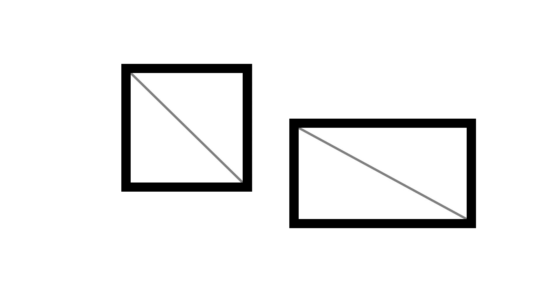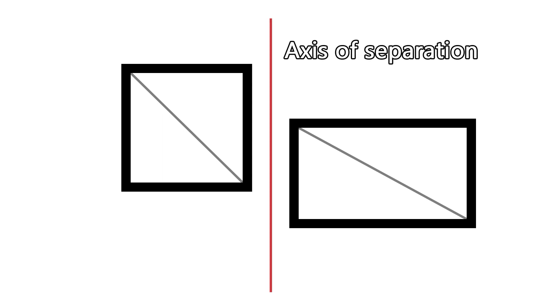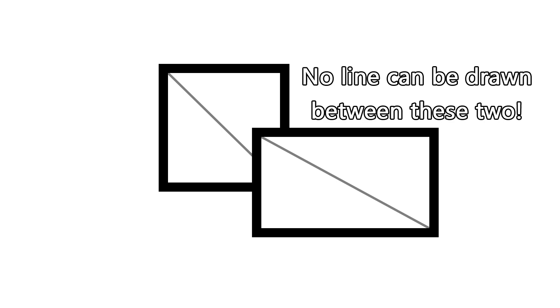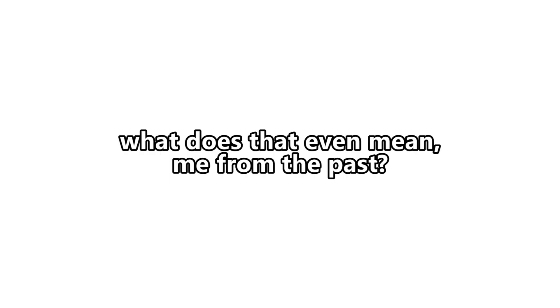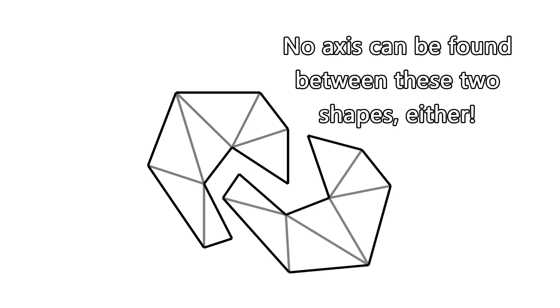If you have two shapes — let's say these two rectangles — and if you are able to find a line that you can draw between them, then that is one axis of separation and you know that these two shapes are not intersecting. This is a fairly solid generic test you can use for a bunch of different collision shapes in 3D space. Note that this will only work for shapes that are convex. If you have a concave shape, it is possible for it to be intersecting with another shape without any possible axis of separation being found.